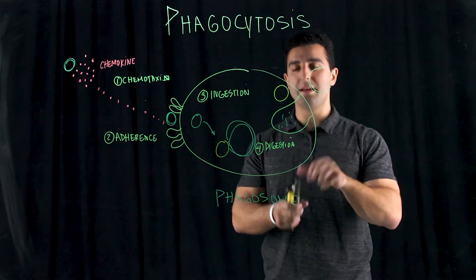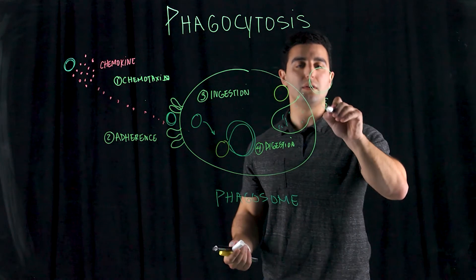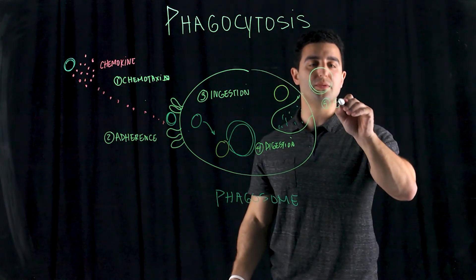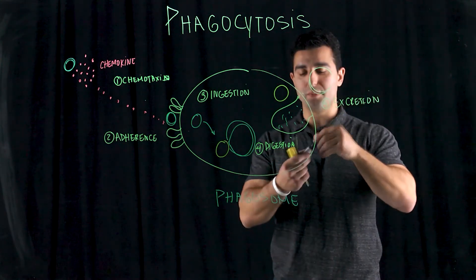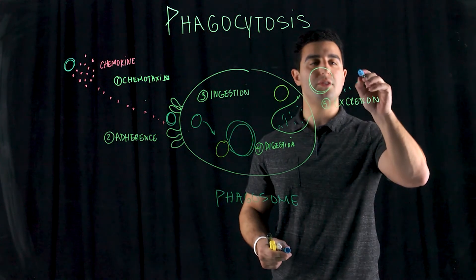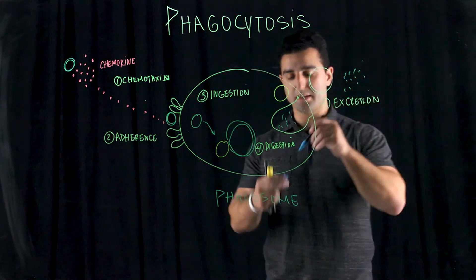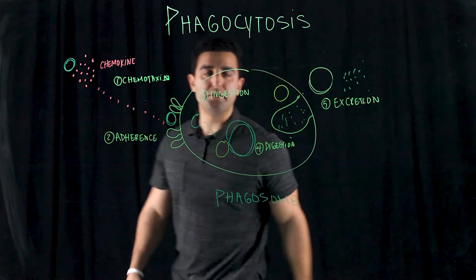Everything now in the fifth step is referred to as either killing or excretion. So we'll put excretion of the pathogen of whatever is remained. So now after breaking down this proteins of all the pathogen, now you just have all this little excrements here outside of the cell. And this is the basic overview of phagocytosis.